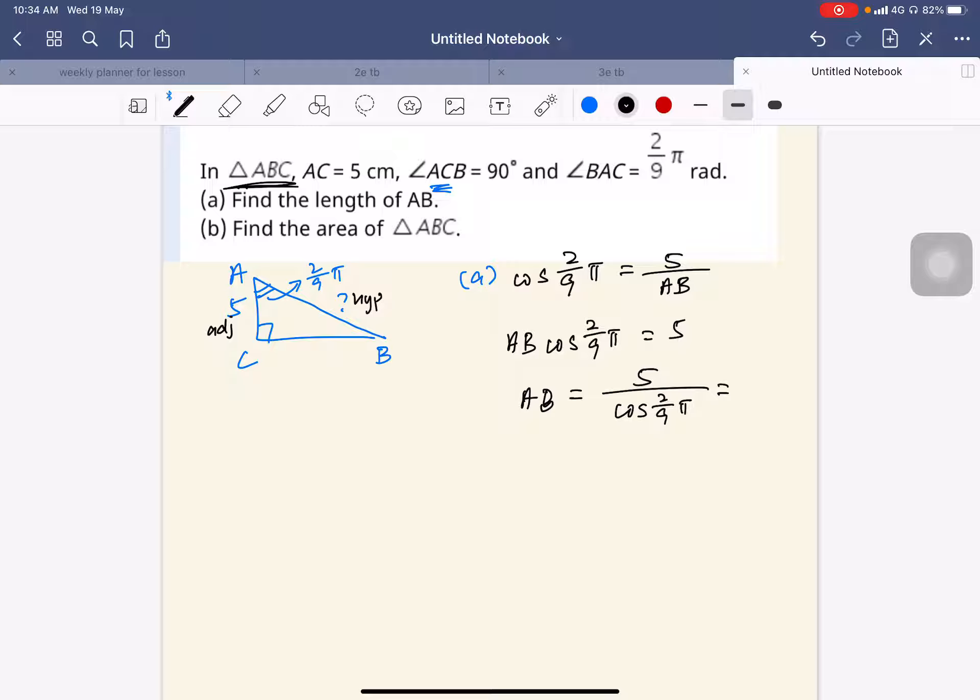Cannot be in the degree mode anymore. So make sure your calculator is in the radian mode. So 5 divided by cosine 2 pi over 9. So I will get 6.52704. So 3 significant figures will be 6.53 cm.